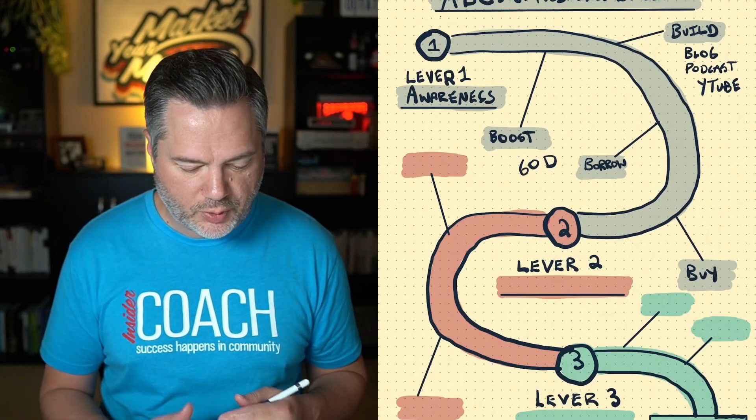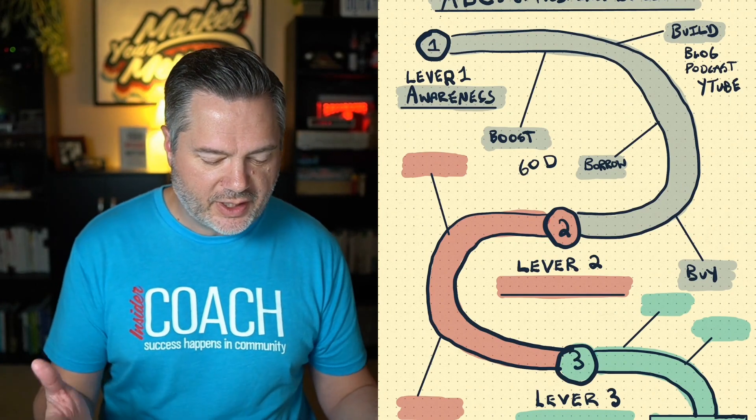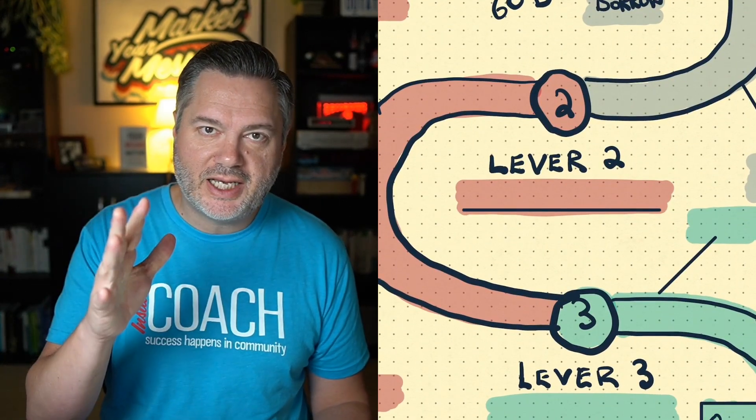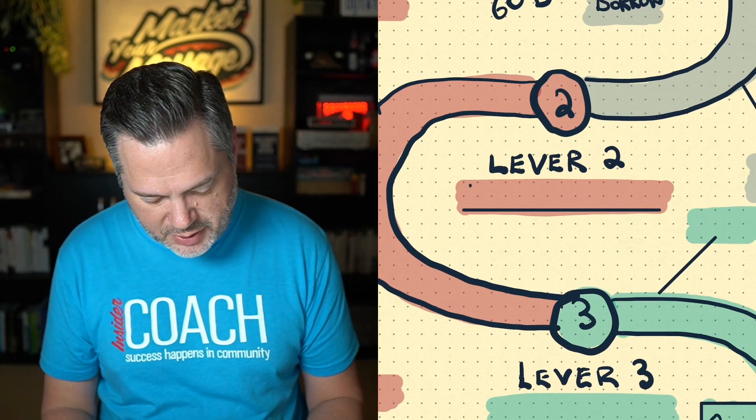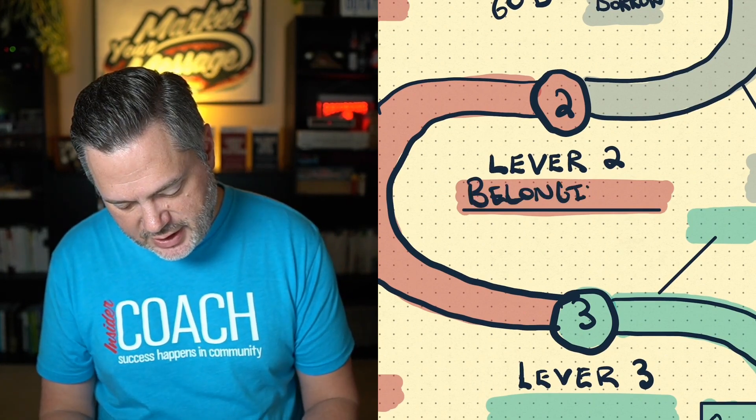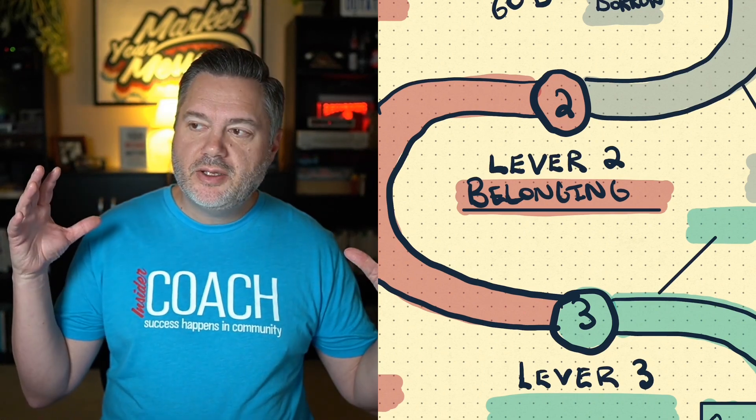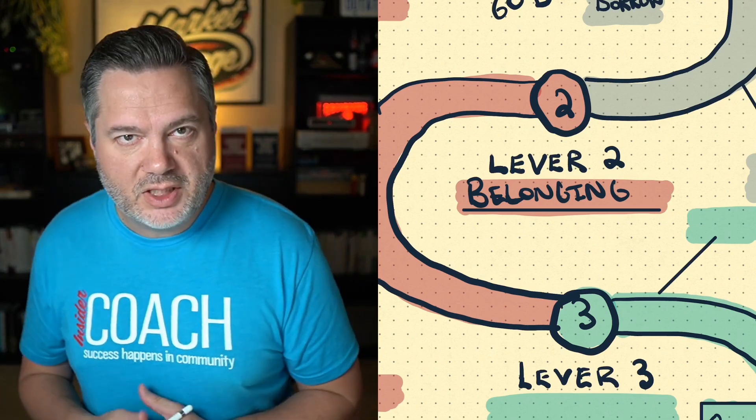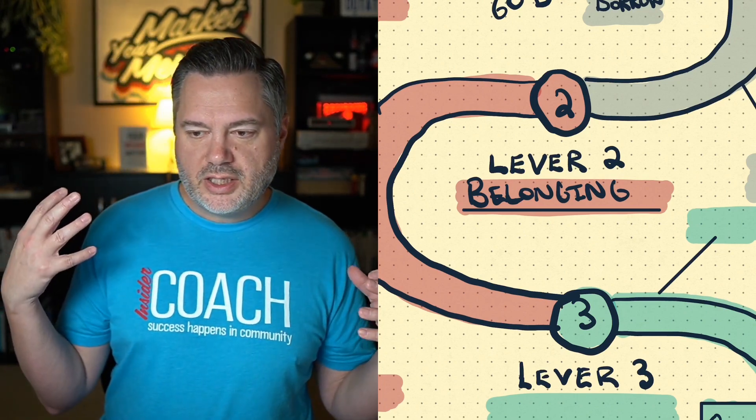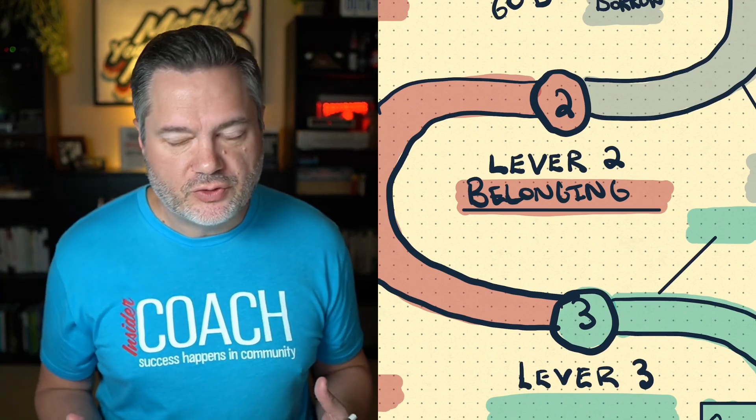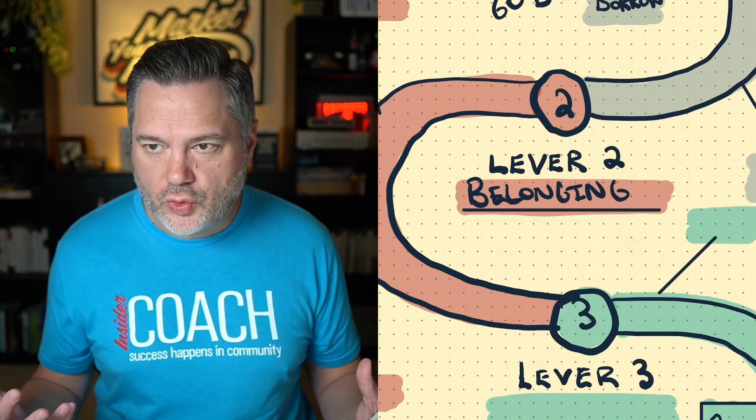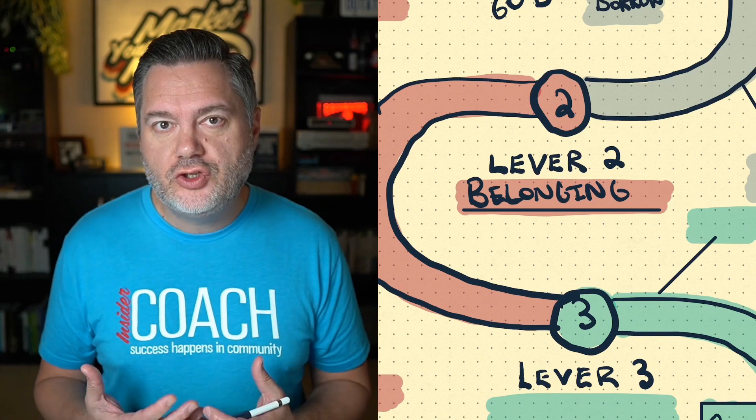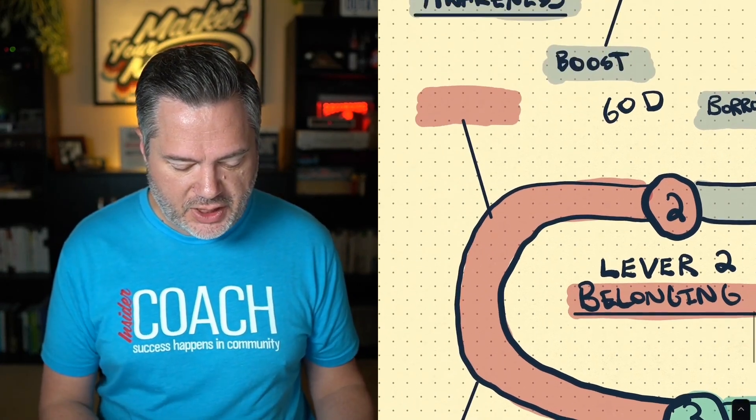Alright, let's get to number two. This is a big one, really important. So if A is awareness, what is B? The lever two that you need to pull in your business to create that online presence is belonging. You need to create a community of people. You need to create people who say, these are my people or this is my mentor or we have shared values. We have shared passions and goals and shared struggles. And so the way that you build this community is really important.